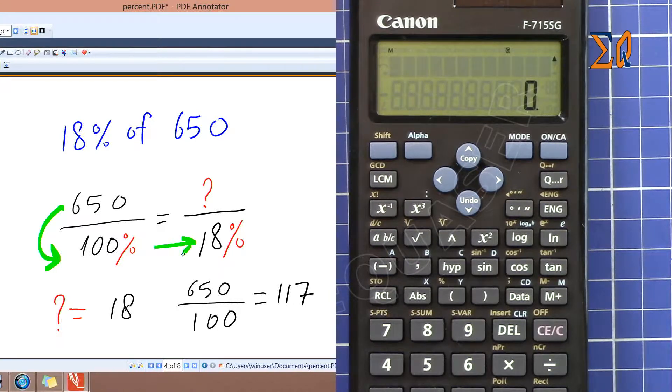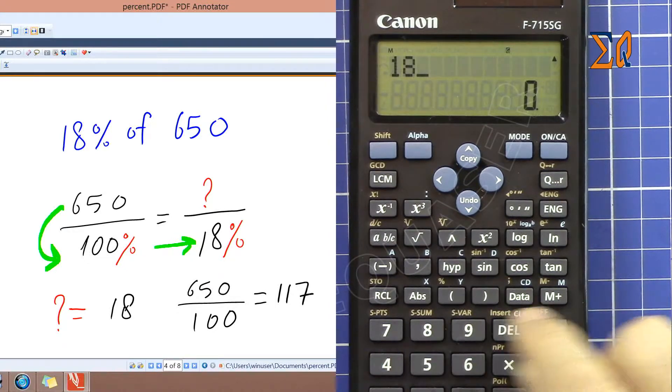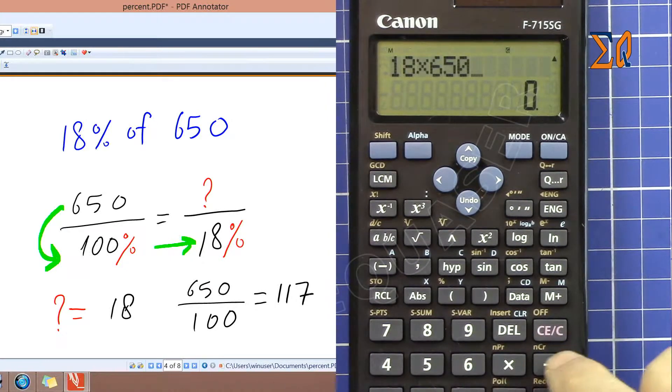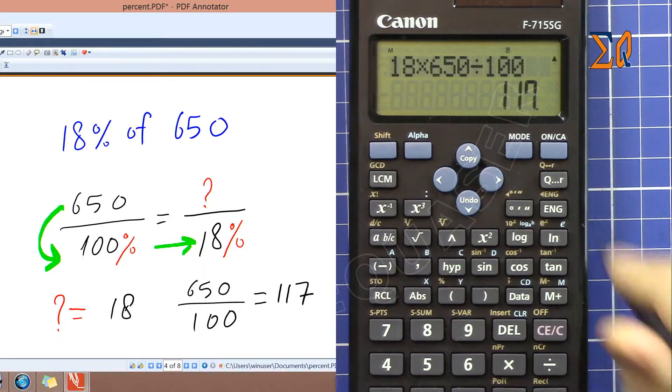So write 18% at the denominator. Once you do that, just write it like that. So we are doing cross multiplication and then 18 multiply by the flip of that, so 650 over 100. So 18 times 650 divided by 100 will give you the answer.